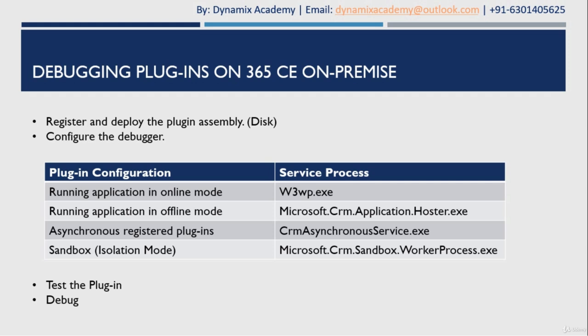The first thing you need to do in order to debug a plugin on-premise is to register and deploy the plugin assembly in disk mode. We have already seen that you can register a plugin assembly in either database, disk, or GAC file. In order to debug a plugin, change your plugin assembly location to disk and then configure the debugger.